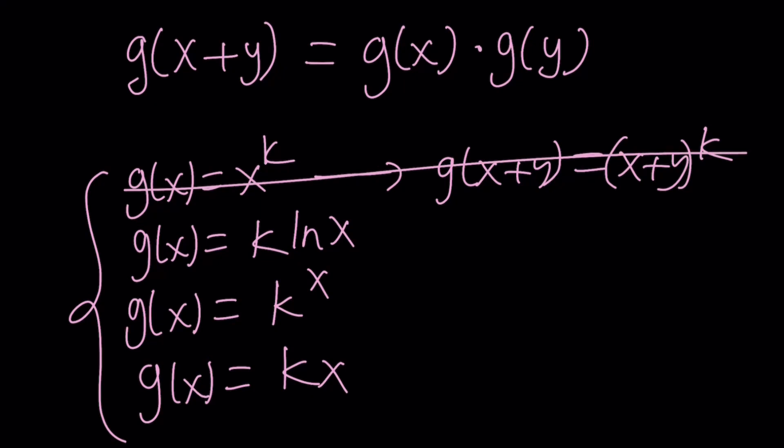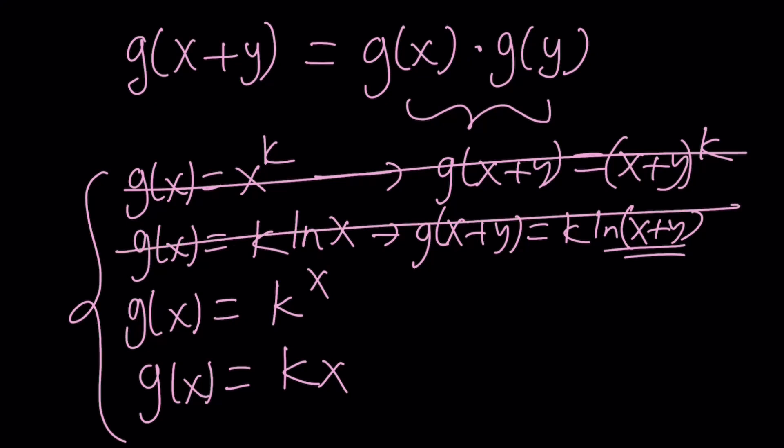You don't have to do trial and error here, but I'm just showing you how you can plug in and check if you know the candidates. What about an ln? Okay. Let's try it out. g of x plus y is going to be k lnx plus y. But guess what? lnx plus y cannot be broken down. So there's no way it's going to be equal to this. Not a product. So that's not going to work either. Wow.